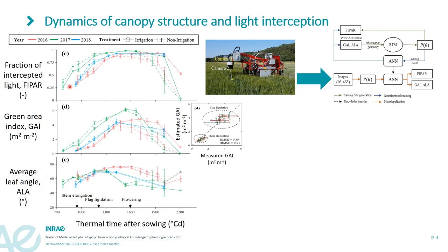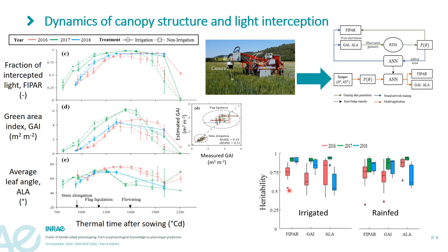You can see here estimation with the D3P platform of the fraction of intercepted PAR, the green area index, and the average leaf angle distribution of the canopy. Most of the parameters were retrieved with good accuracy and high repeatability.